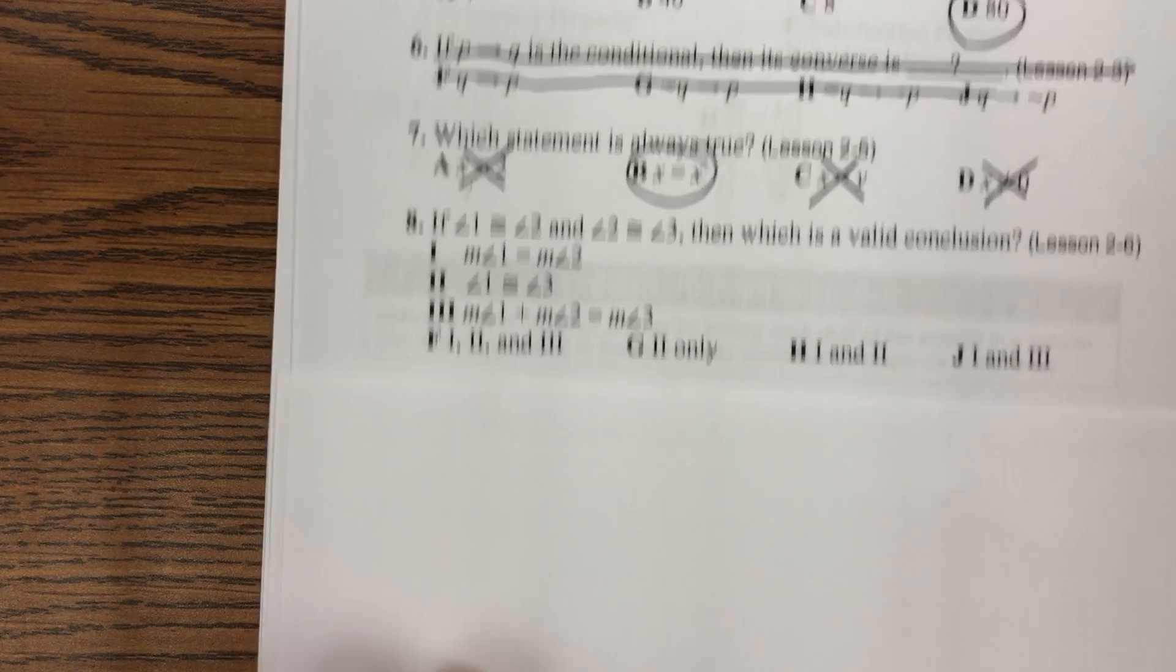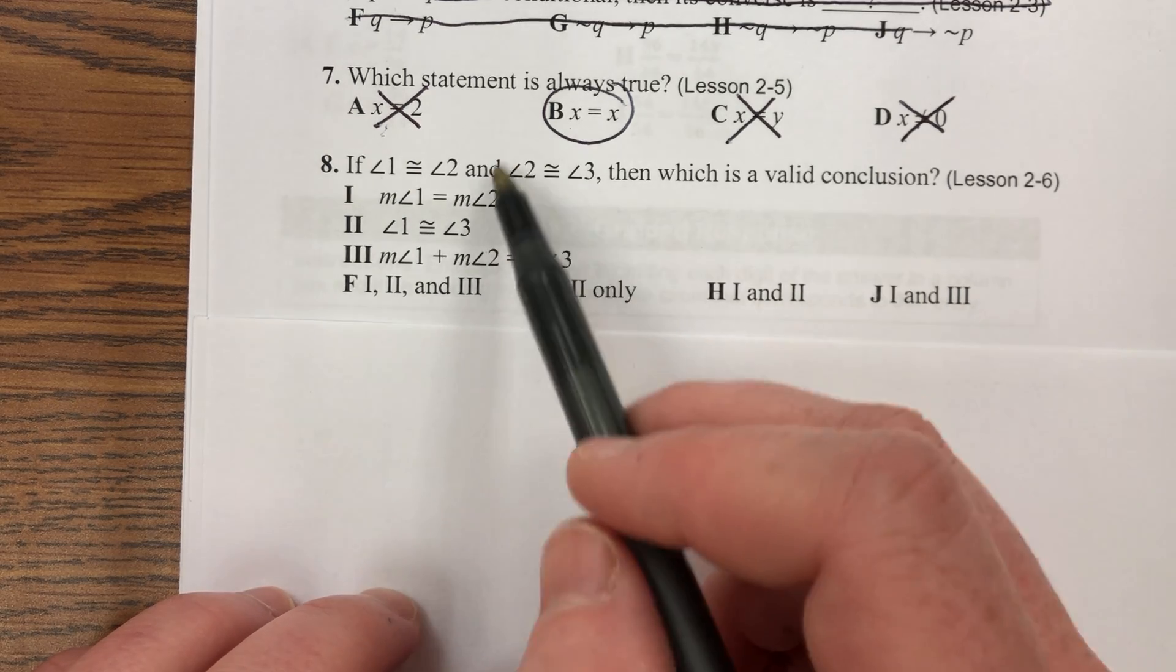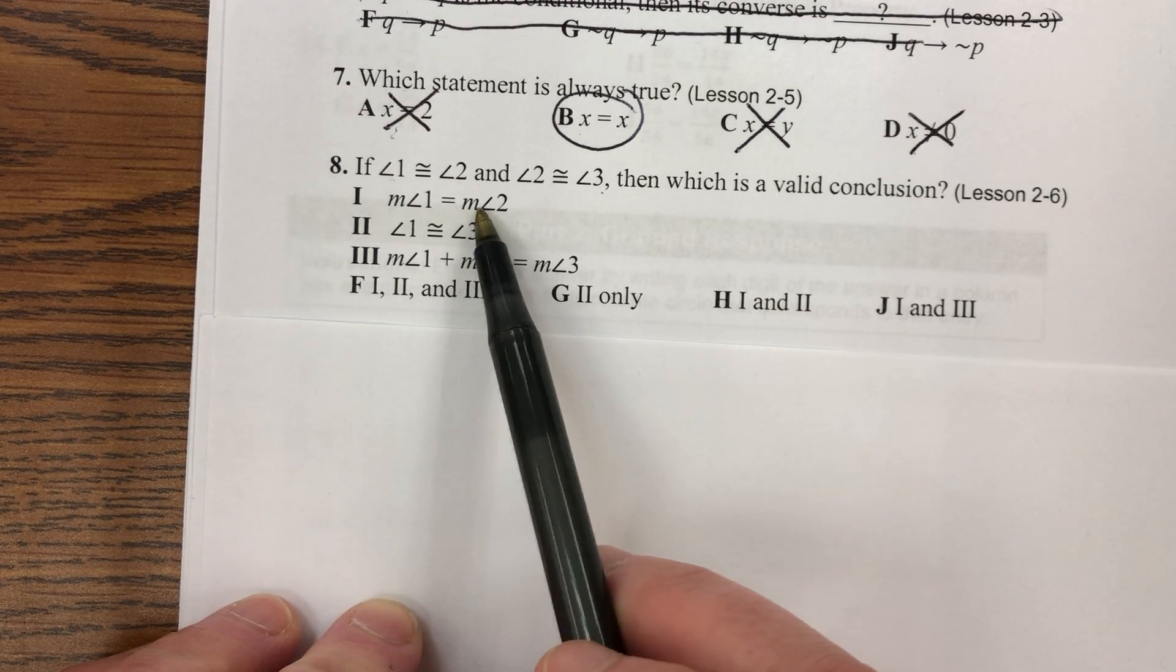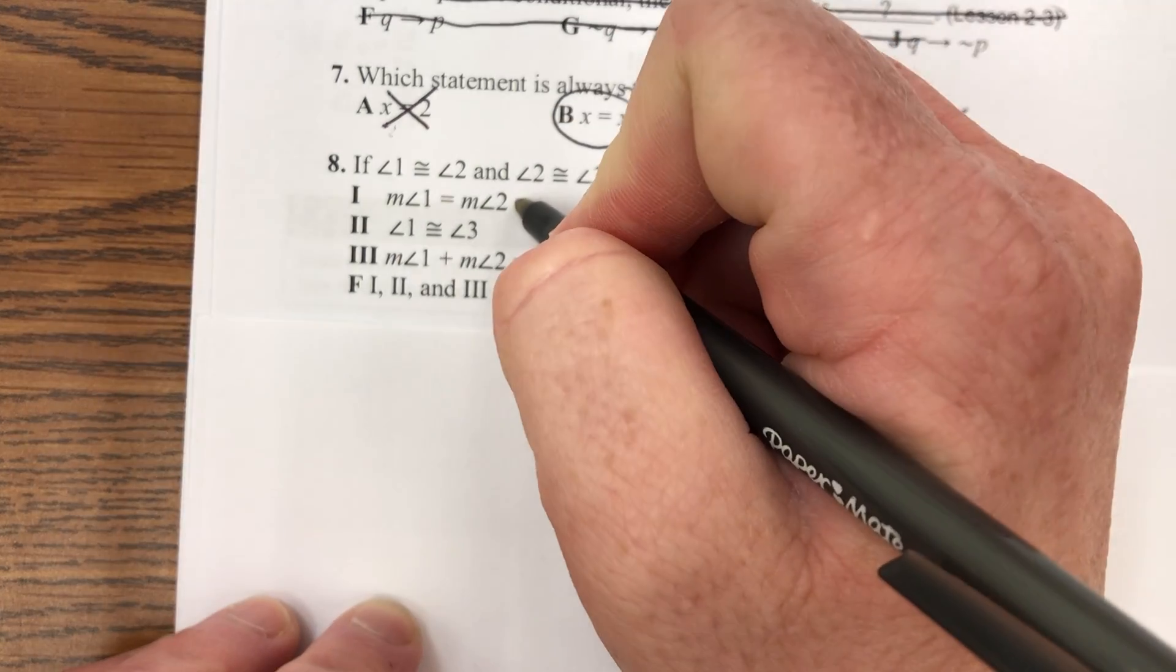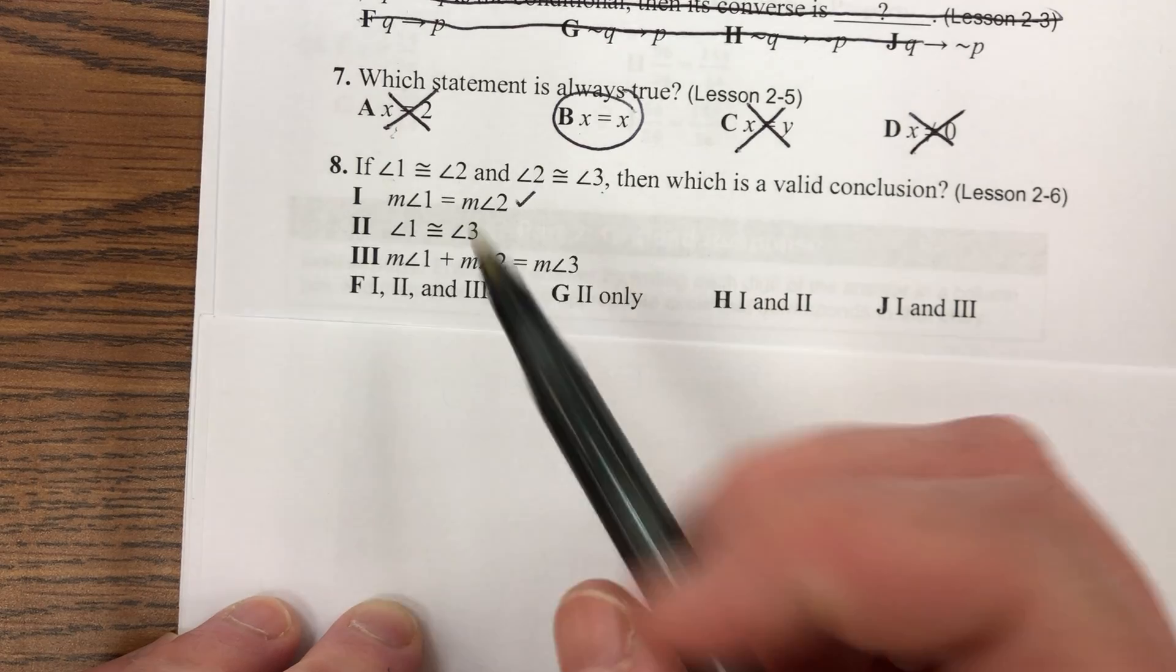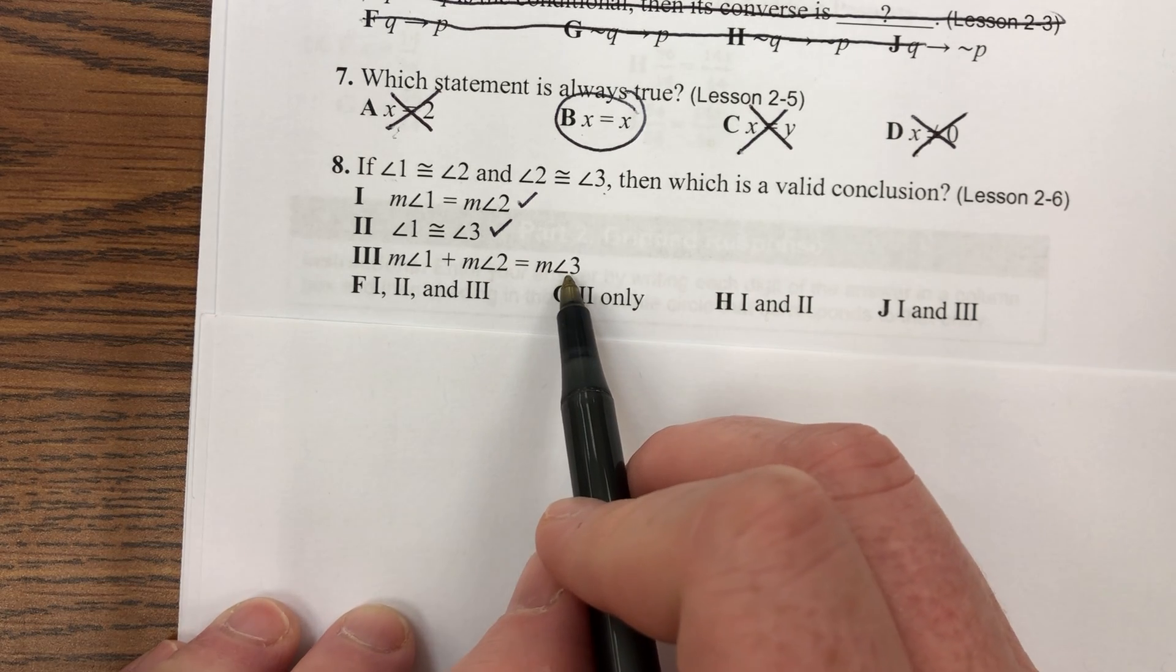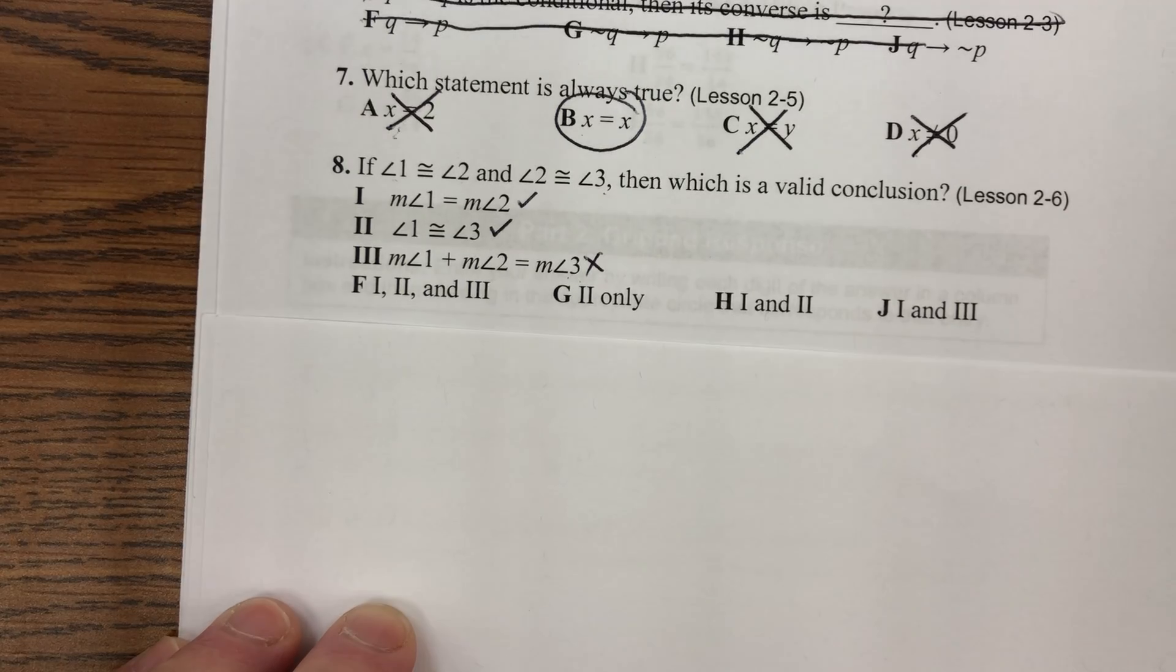And then the last one we're going to do on this little review from chapters one and the beginning of two is number eight. If angles 1 and 2 are congruent, and then that same angle 2 is also congruent to angle 3, which of the following is a valid conclusion? Well, if angles 1 and 2 are congruent, doesn't that mean that their measures are equal? Yeah. We have two angles that are the same size. That means if one of them is 30 degrees, the other one's 30 degrees. So their measures would be equal. That is true. If angle 1 is congruent to 2 and that same 2 is also congruent to 3, can't we cut out the middleman and say that 1 and 3 are congruent? Yes. That's the transitive property. Cut out the middleman. And then lastly, if all three angles are congruent, can we say that the measure of angle 1 plus angle 2 adds up to angle 3? No. If each angle is 30 degrees, 30 plus 30 does not equal 30. That doesn't work. So the only two that work are 1 and 2, H.